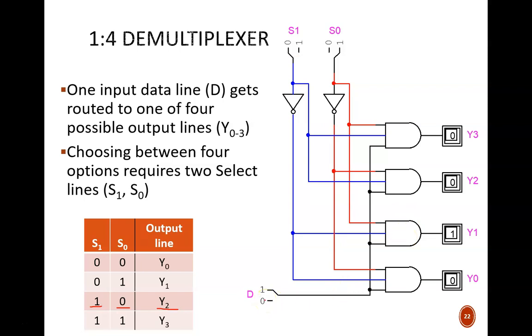For the example shown here, the binary code for the select bits reads 01. This converts to decimal 1, so output Y1 is selected. Therefore, the input D value of 1 passes through here. Meanwhile, all the other inputs are 0.